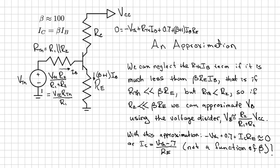So you get zero equals minus VTH plus RTH times IB plus the 0.7 volts across the base emitter junction plus the current going through the RE, which is beta plus 1 IB multiplied by RE, and then you're back where you started. So that's the sum of the voltages around the loop.